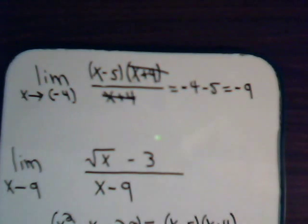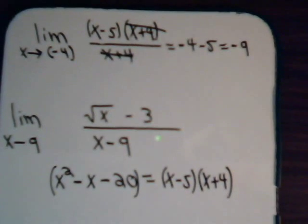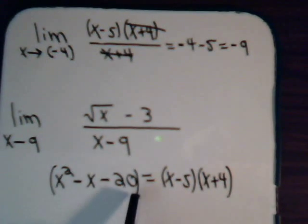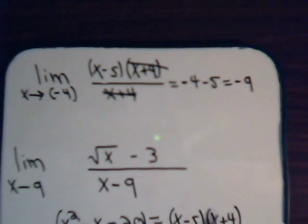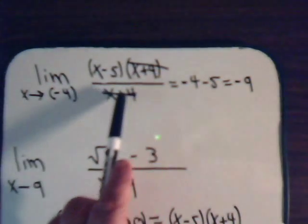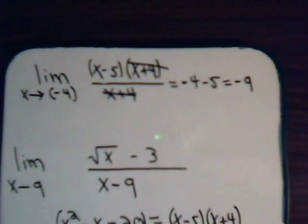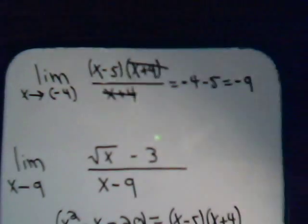So notice that once we rewrote the numerator, it canceled this denominator here. Then we could go ahead and take the limit. And the problem made sense.